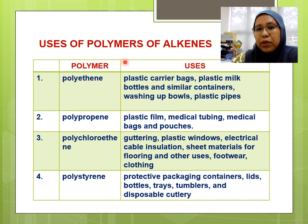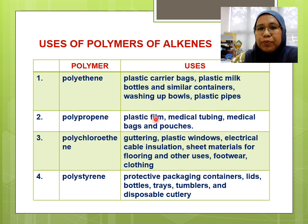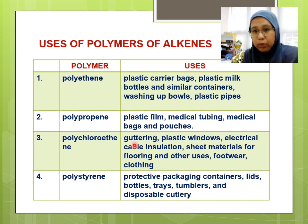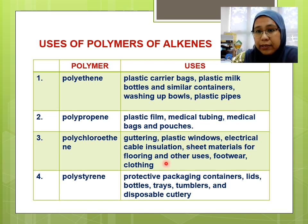What are the uses of polymers from alkenes? As you can see in the pictures, polyethene is used as plastic carrier bags, washing-up bowls, and plastic pipes. Polypropene is used for plastic film, medical tubing, medical bags and pouches. Polychloroethene is used for guttering — the watering system from rain going down the side of a house — plastic windows, electrical cable insulation, sheet materials for flooring, footwear, and clothing, especially raincoats.